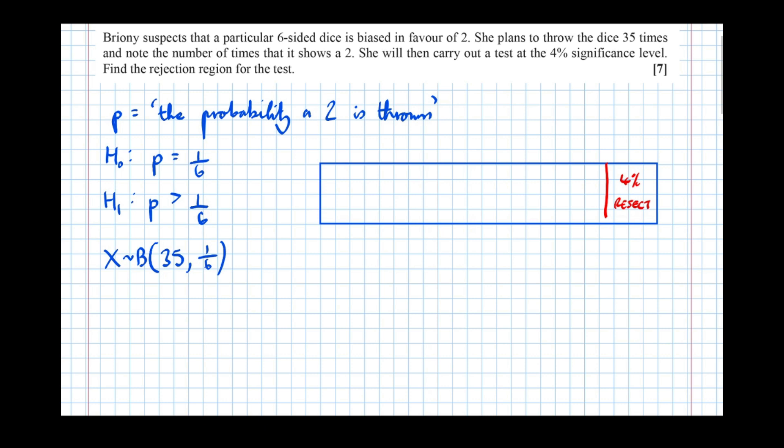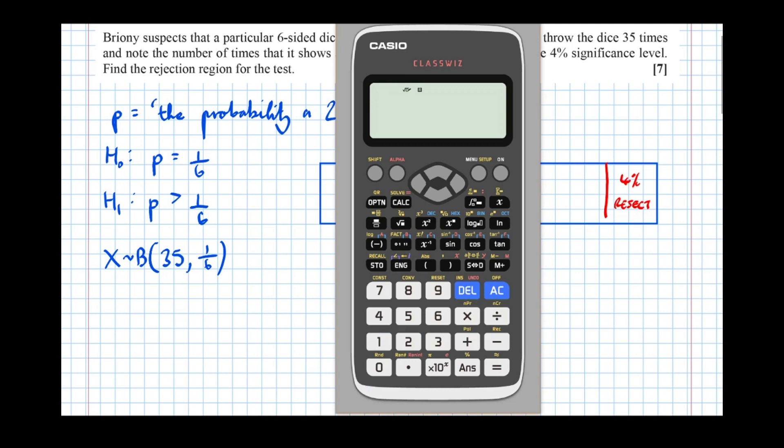So let's try and find out the values that we do reject. So testing to the right, the top 4%. Well, the boundary, because the calculator only works out probability to the left of a value, a less than or equal to. Really, it's going to be better here if we consider the left-hand 96%. So binomial cumulative list. And let's type in 34, 33, 32, 31, 30.